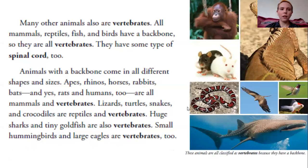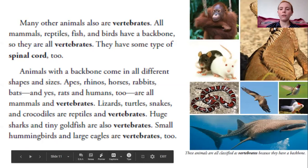Many other animals are also vertebrates. All mammals, reptiles, fish, and birds have a backbone, so they are all vertebrates, and they have some type of spinal cord too. Animals with a backbone come in all different shapes and sizes. Apes, rhinos, horses, rabbits, bats, rats, and humans are all mammals and vertebrates. Lizards, turtles, snakes, and crocodiles are reptiles and vertebrates. Huge sharks and tiny goldfish are also vertebrates. Small hummingbirds and large eagles are vertebrates too. The photograph caption says these animals are all classified as vertebrates because they have a backbone.